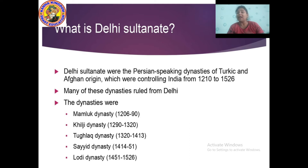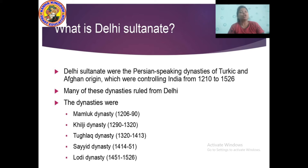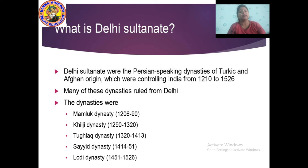The dynasties of the Delhi Sultanate were the Mamluk dynasty, Khilji dynasty, Tughlaq dynasty, Sayyad dynasty, and Lodi dynasty. These five dynasties ruled Delhi and India from 1210 to 1526.